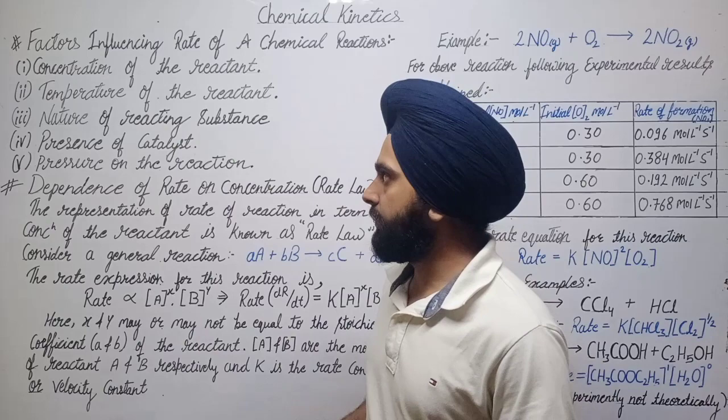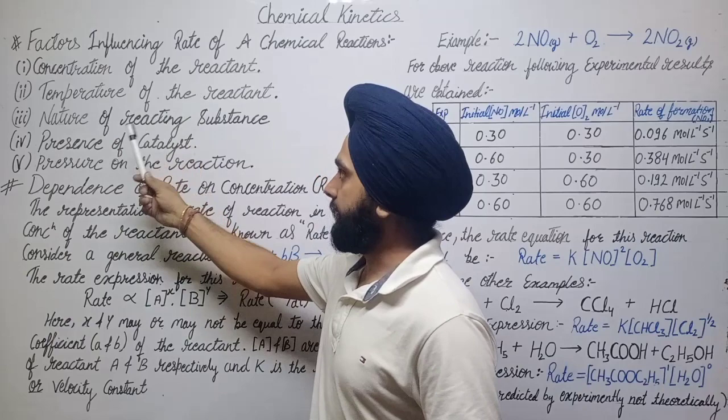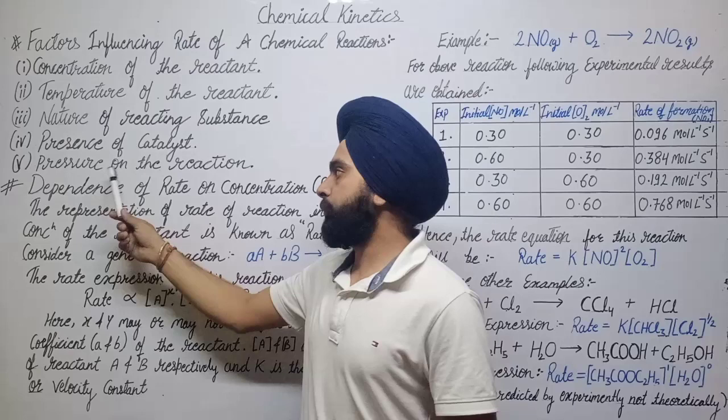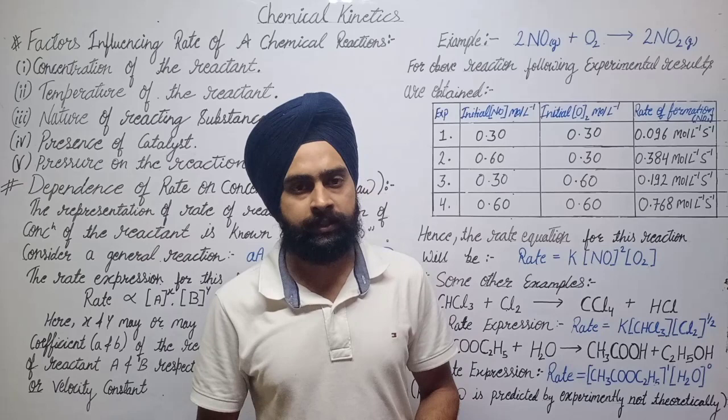Here we have five main different factors which can affect the rate of chemical reaction. They are mainly: concentration of the reactant, temperature of the reactant, nature of reacting substances, presence of catalyst, and pressure on the reaction.